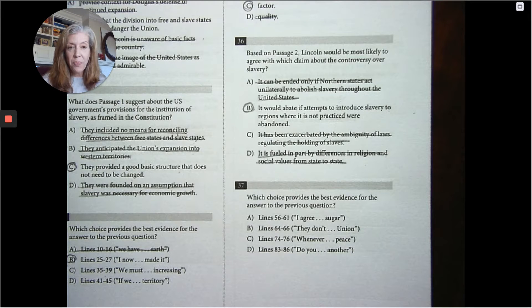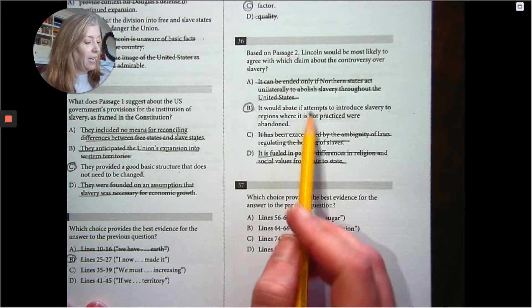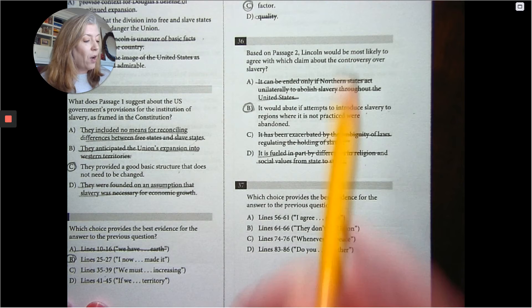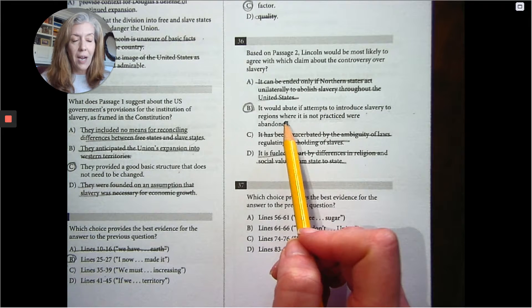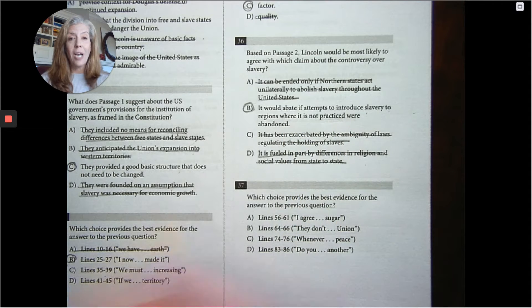Number 37, which choice provides the best evidence to the answer to the previous question? Again, that it's going to stop slavery. The arguments would stop if we would stop trying to introduce slavery to our new territories.